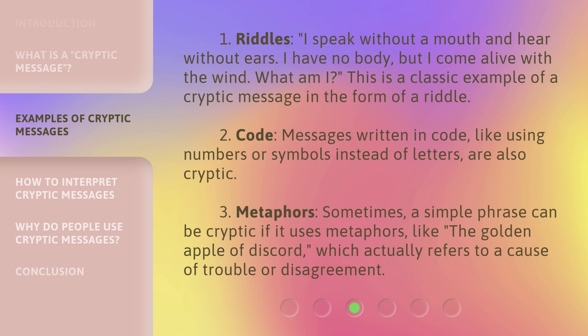1. Riddles. "I speak without a mouth and hear without ears. I have no body, but I come alive with the wind. What am I?" This is a classic example of a cryptic message in the form of a riddle. 2. Code. Messages written in code, like using numbers or symbols instead of letters, are also cryptic.